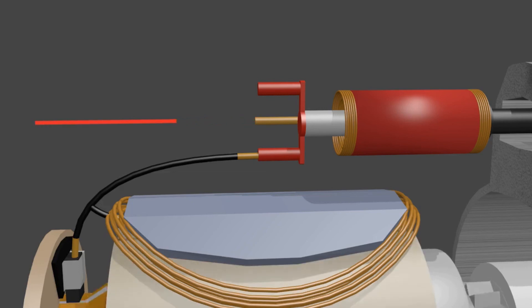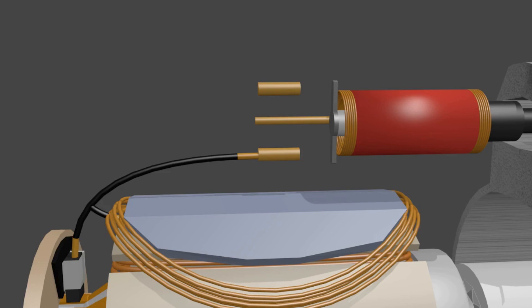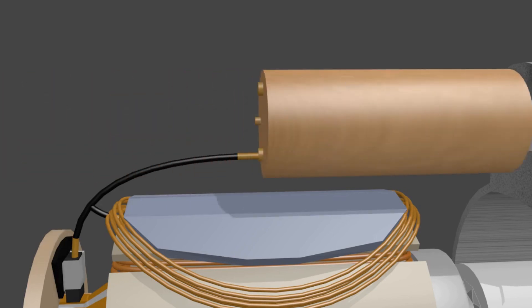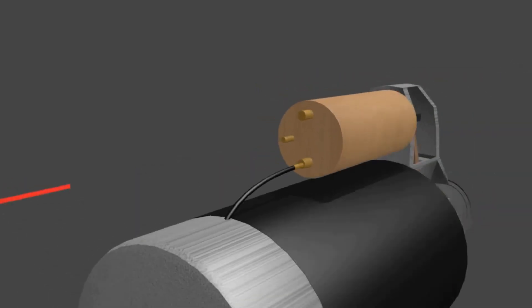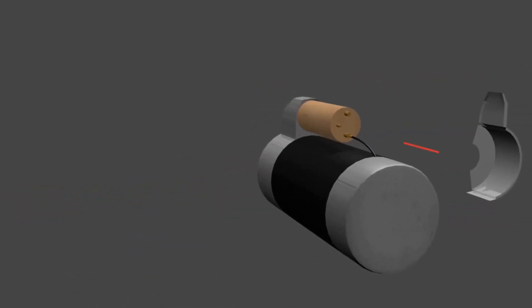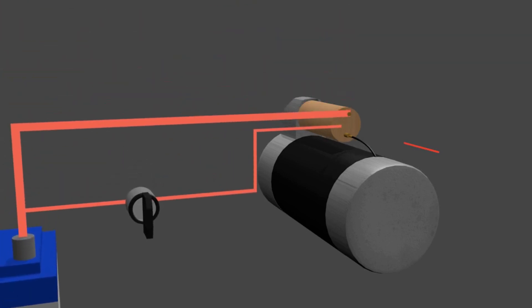When the current in the solenoid is cut off, the magnetic field is lost. So that the iron core is no longer pushed. This time the return spring pushes the iron core back to its original position. So that the starter gear comes back in, and the starter motor off.